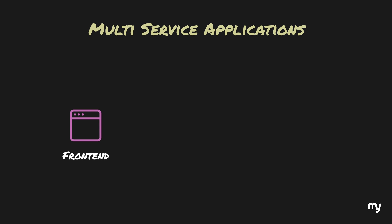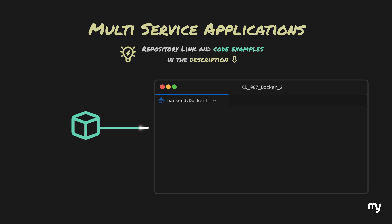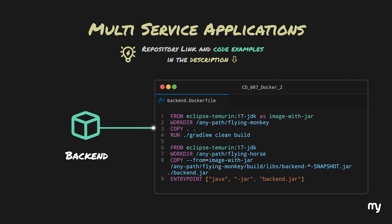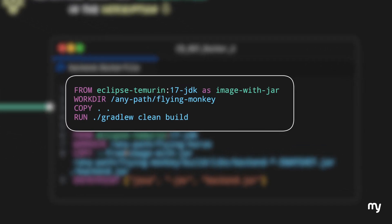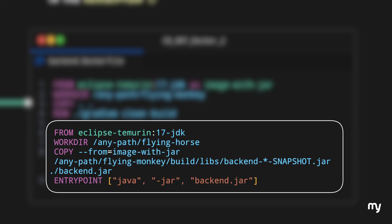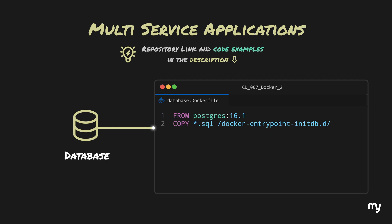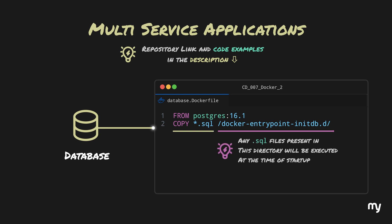The first Dockerfile is for the frontend: we source an nginx image and copy the HTML, CSS, and JavaScript to nginx's hosting directory. The second Dockerfile is for the backend — a Java Spring Boot application with two layers: the first copies and compiles the Java code to create an executable JAR file, and the second executes that JAR. The third Dockerfile for the database sources a PostgreSQL image and copies SQL files into a directory where PostgreSQL will execute them at startup to create the database.